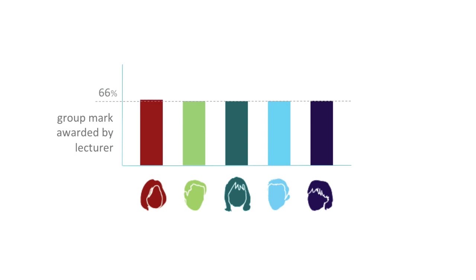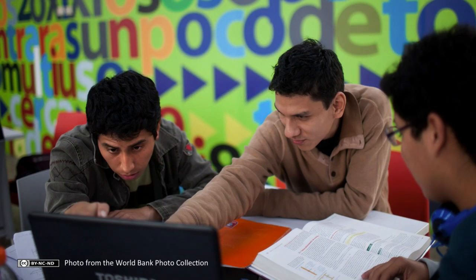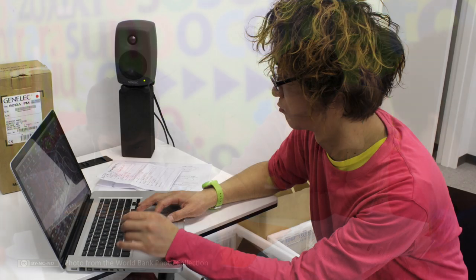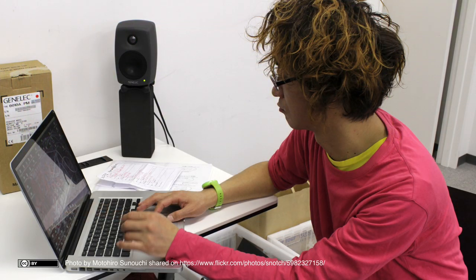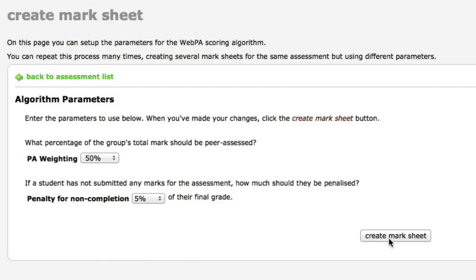WebPA uses peer assessment. The final mark of each student is based on the group mark, but some or all of this is then modified using the peers' ratings. While students' views are used to modify the final individual marks, staff remain in control. It is up to the lecturer to determine the weighting to apply to the peer assessment and whether or not to apply a penalty if students don't take part in the peer assessment process.